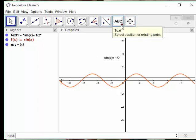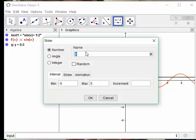So let me define a slider now. I'm going to call it k, and I'll let k run from negative 5 to 5 by 1 because I only want whole numbers, integers here.